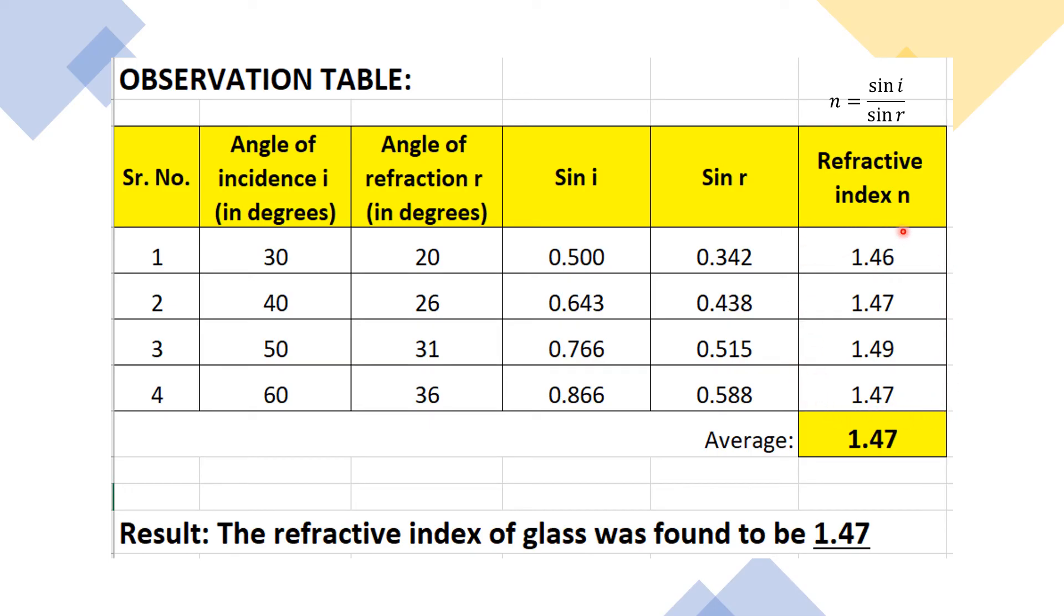It is close to 1.5, so the average value is 1.47. We get the average value by adding all of them divided by the total number of observations, which is 4. This is our final result.